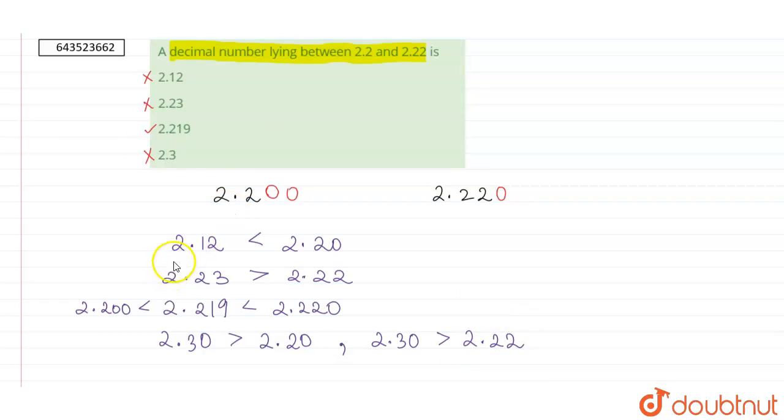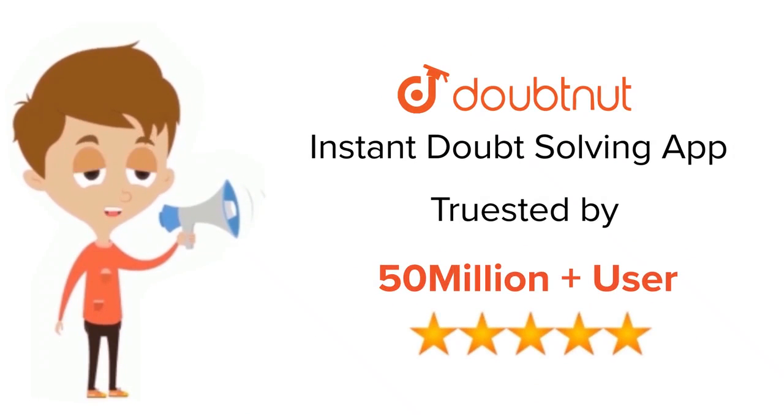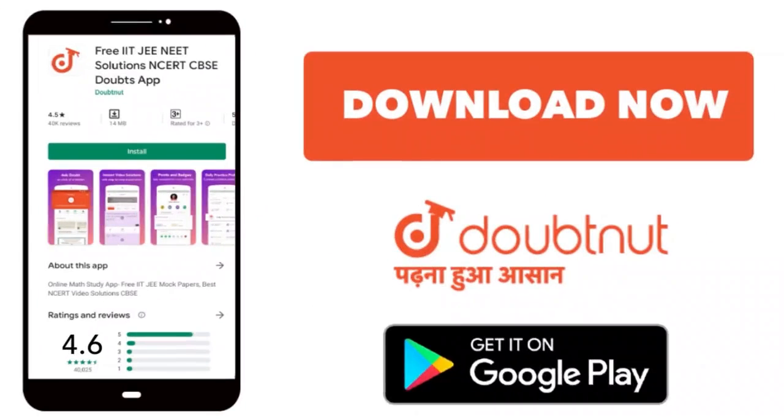So only option 3, 2.219, lies between 2.2 and 2.22. For class 6 to 12, up to IIT-JEE and NEET level, trusted by more than 5 crore students. Download Doubtnet today.